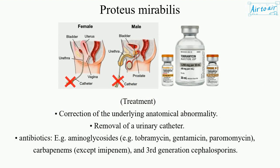Treatment includes correction of the underlying anatomical abnormality and removal of a urinary catheter. Antibiotics include aminoglycosides, e.g. tobramycin, gentamicin, paromomycin; carbapenems, except imipenem; and third-generation cephalosporins.